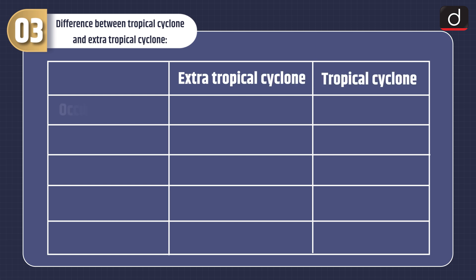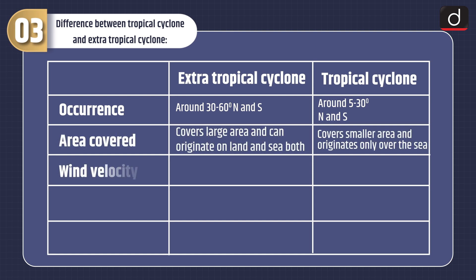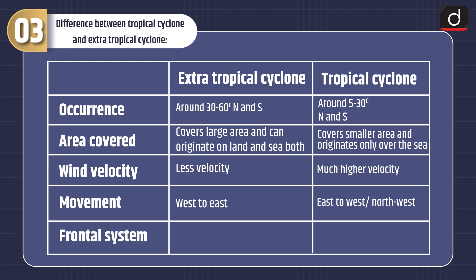Now let's look at the differences between tropical cyclones and extra tropical cyclones. Extra tropical cyclones occur around 30 to 60 degrees north and south, while tropical cyclones occur around 5 to 30 degrees north and south. Extra tropical cyclones cover a large area and can originate on land and sea both, while tropical cyclones cover a smaller area and originate only over the sea. Extra tropical cyclones have less wind velocity, while tropical cyclones have much higher velocity. Extra tropical cyclones move west to east, while tropical cyclones move from east to west, that is northwest. Extra tropical cyclones have a clear frontal system, while tropical cyclones have no fronts.